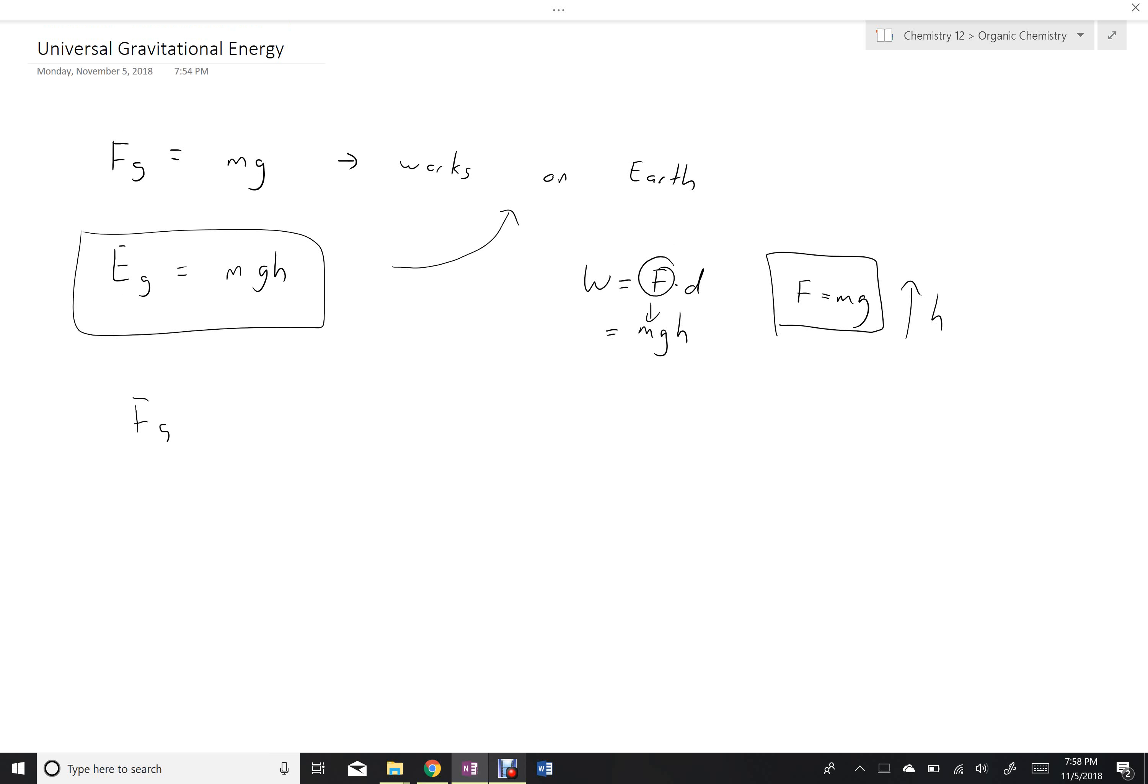So we adjusted our force of gravity formula, capital G, M1, M2, over R squared, where remember R represented the distance between, say, the center of the two objects.